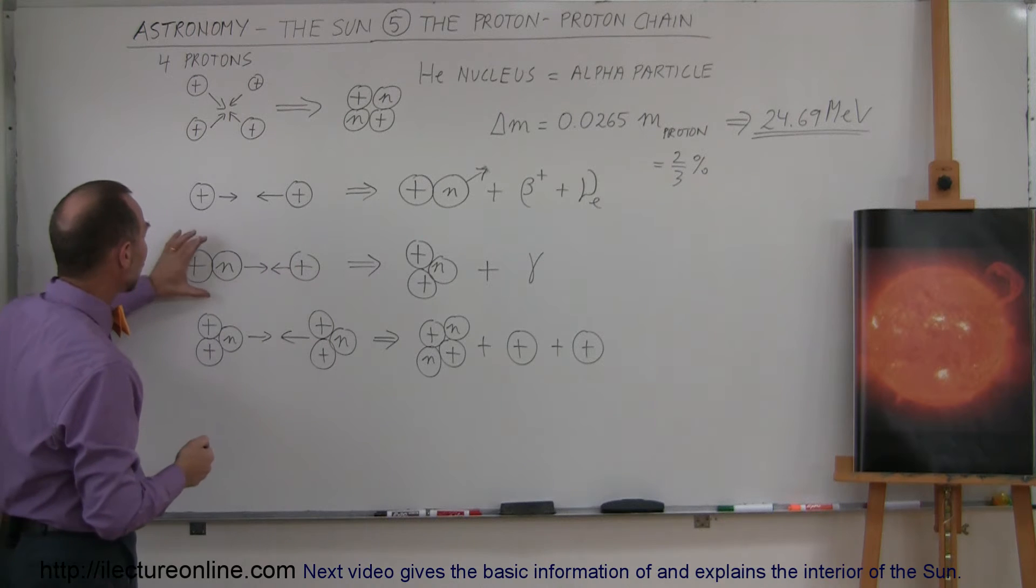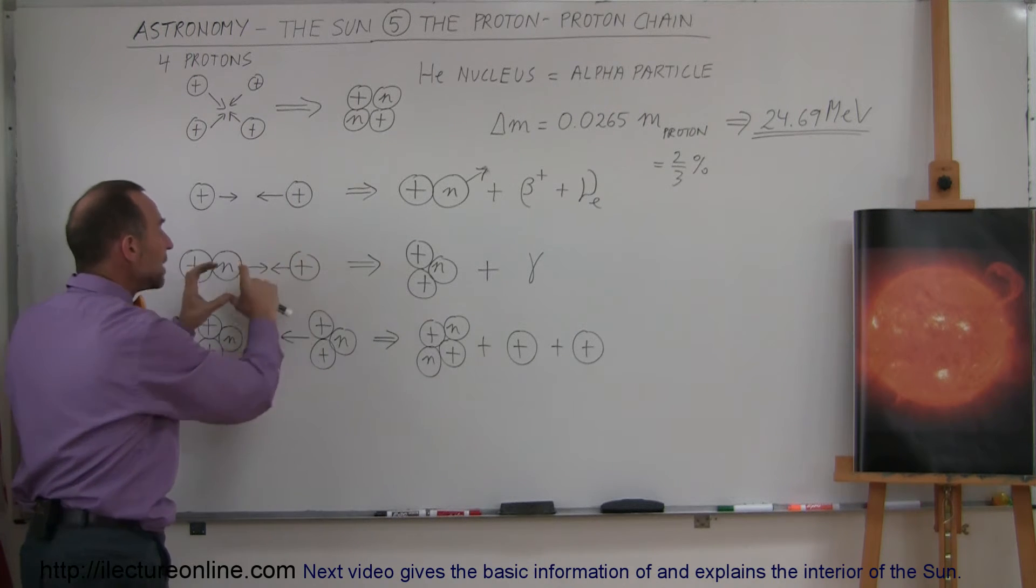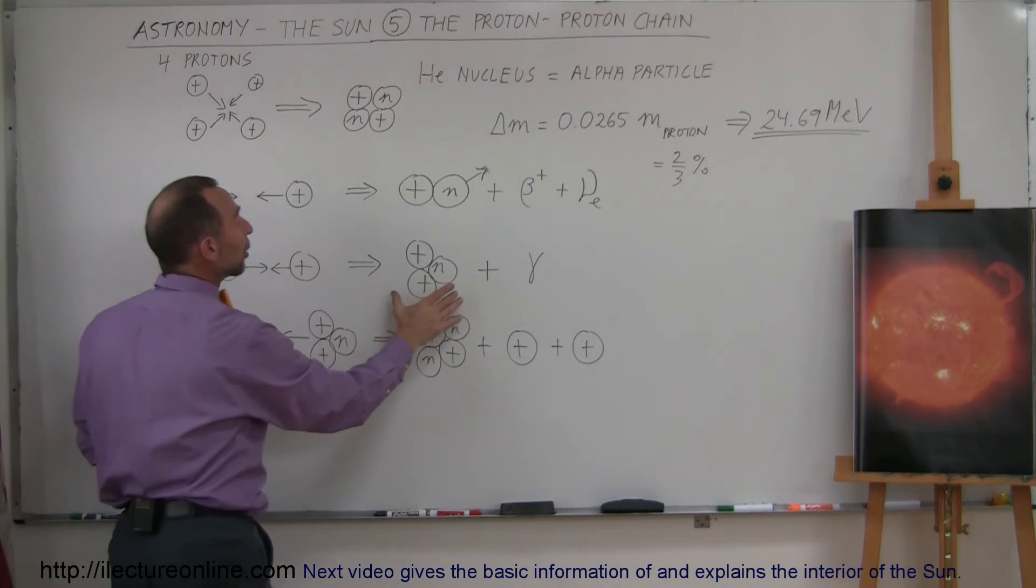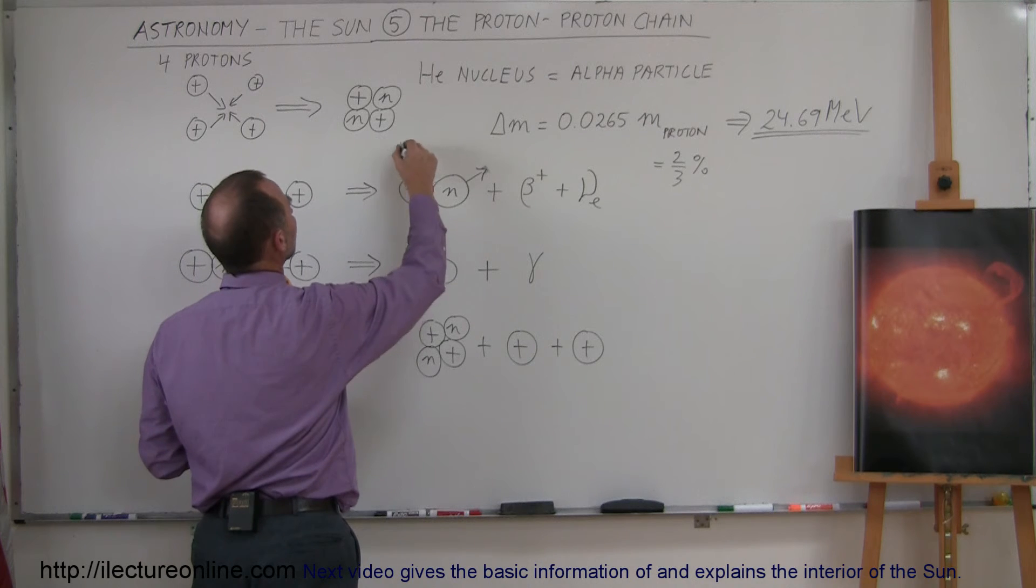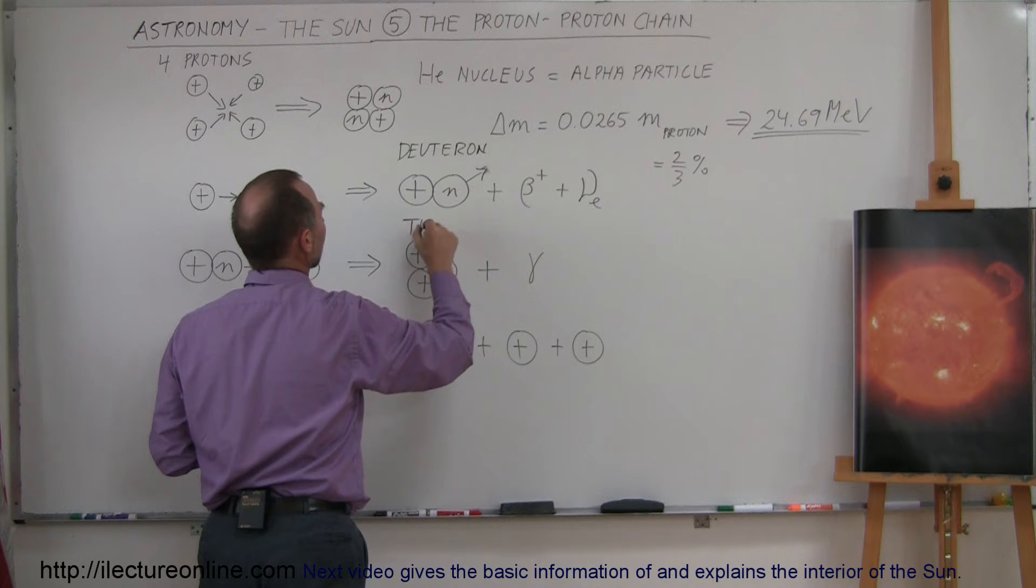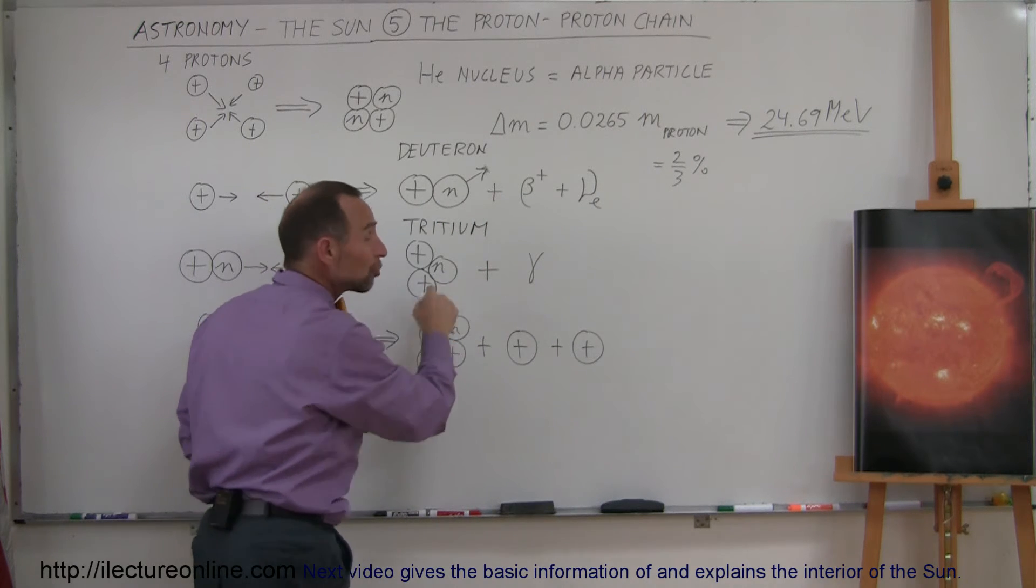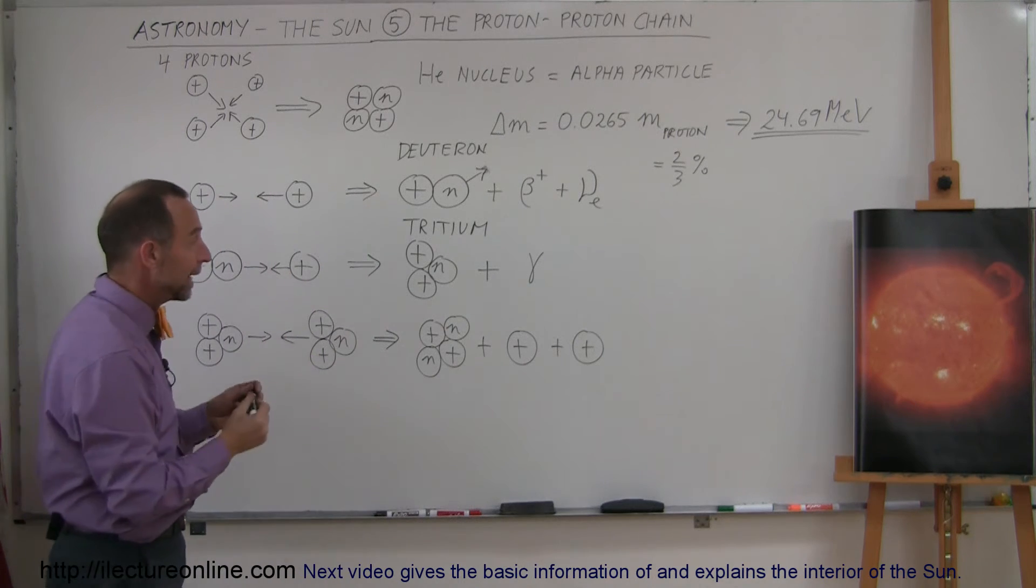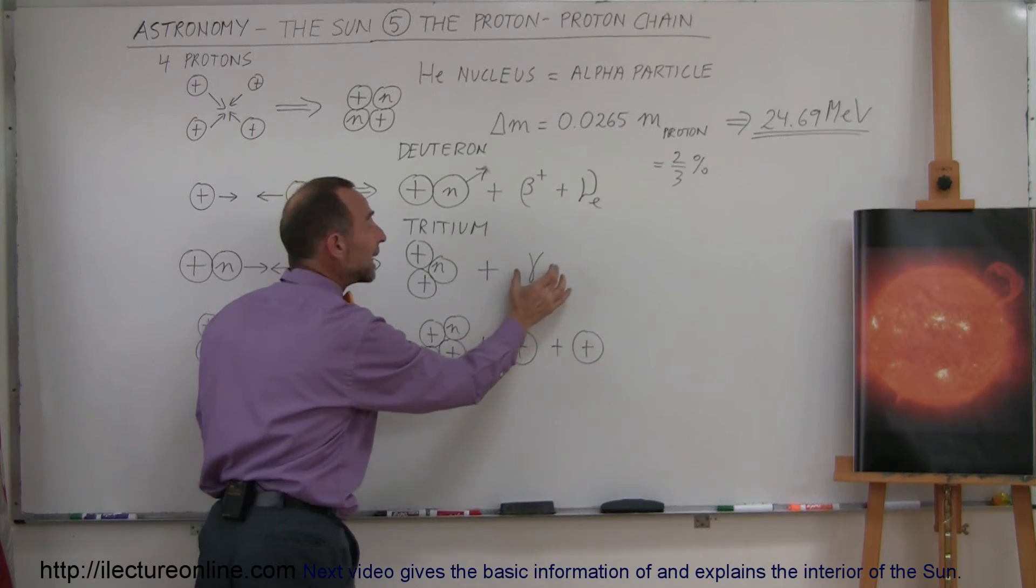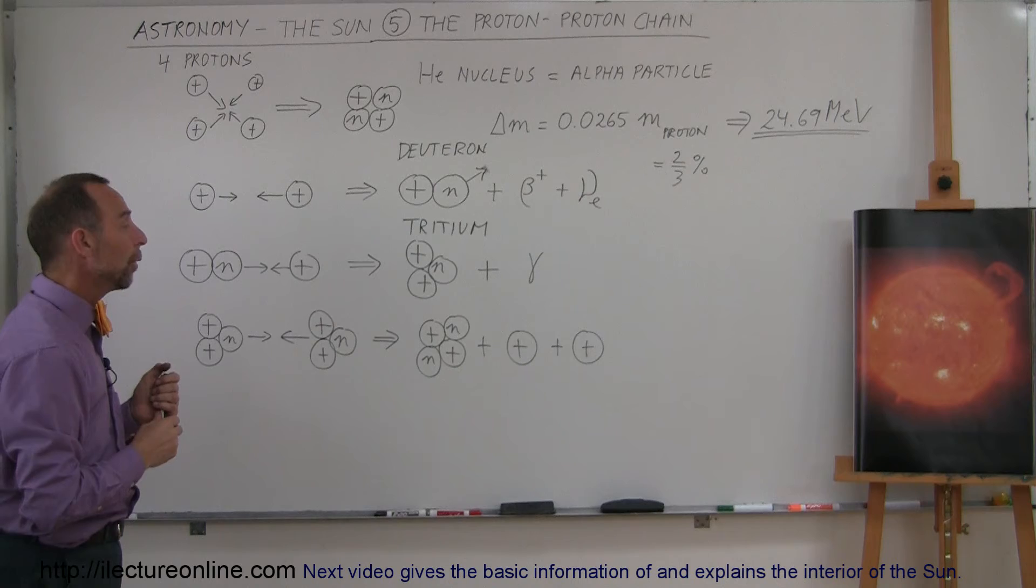So the next part of the process is it takes one of those deuterons and then slams into another proton, and when they meet with high enough velocity, otherwise they will repel each other, they turn into what we call a tritium. A tritium is essentially a helium nucleus, but with only one neutron instead of two neutrons, so it already has two protons and one neutron. One of the byproducts is it sends out a really high energy photon, a gamma ray photon, also carrying a lot of energy away.